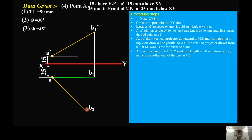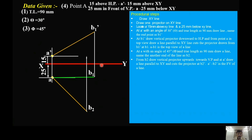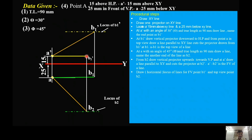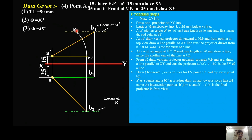At B2, draw a projector vertically up. At A dash, draw a line parallel to XY — that line is going to meet the projector at B2 dash. This is the reduced length in the front view. Draw locus of path lines passing through B1 dash and B2. Then, by fixing A dash, rotate the other end of the front view B2 dash towards this locus of path line. This gives the final projection of the line in the front view. Similarly, by fixing A, rotate the other end of the top view point B1 towards this locus of path line.